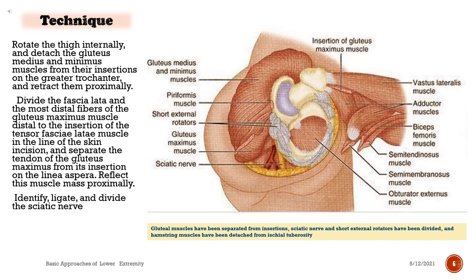Divide the fascia lata and the most distal fibers of the gluteus maximus muscle distal to the insertion of the tensor fasciae latae muscle in the line of the skin incision, and separate the tendon of the gluteus maximus from its insertion on the linea aspera. Reflect this muscle mass proximally. Identify, ligate, and divide the sciatic nerve.